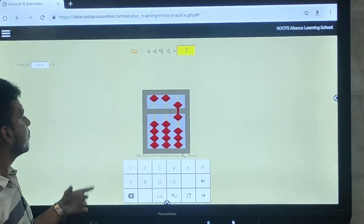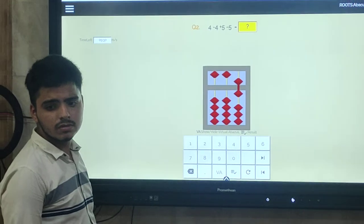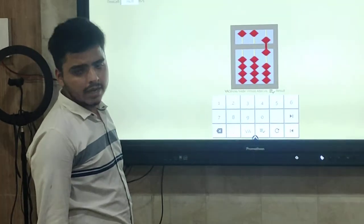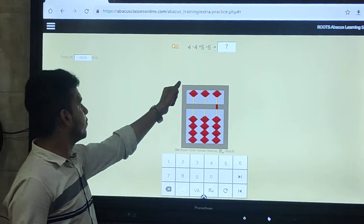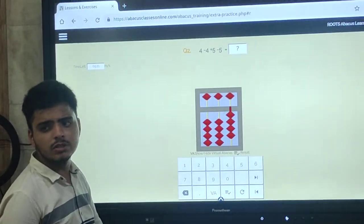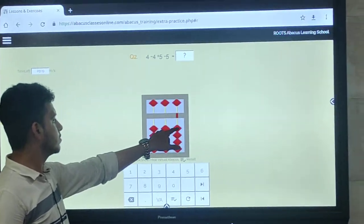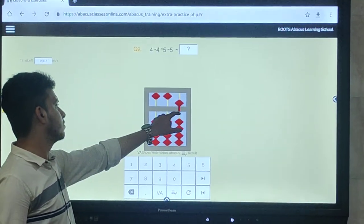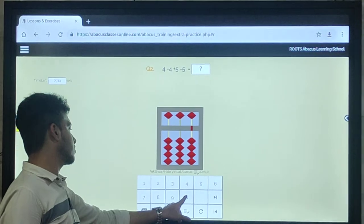Before starting next sum, first what do we check? 4 minus 4. First selecting which finger do we use? 5. Then plus 5, minus 5. Answer? 0.